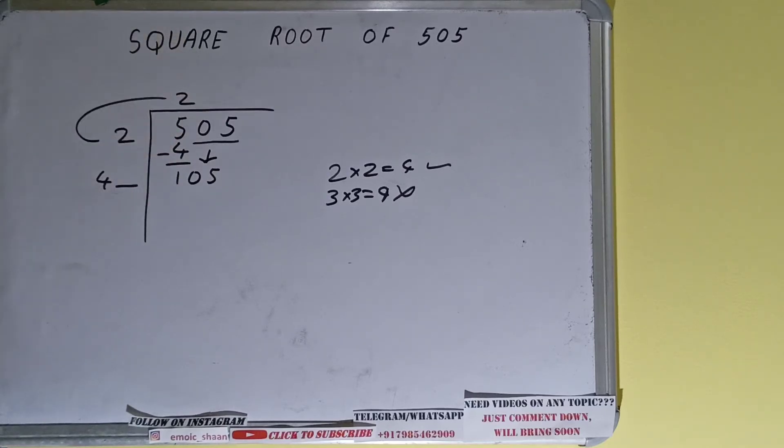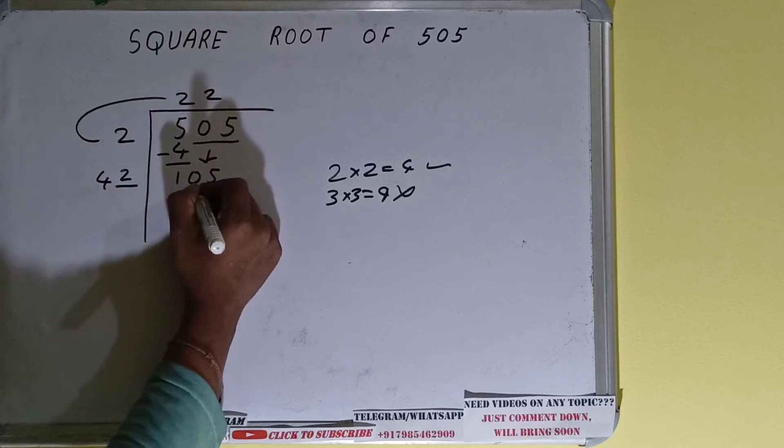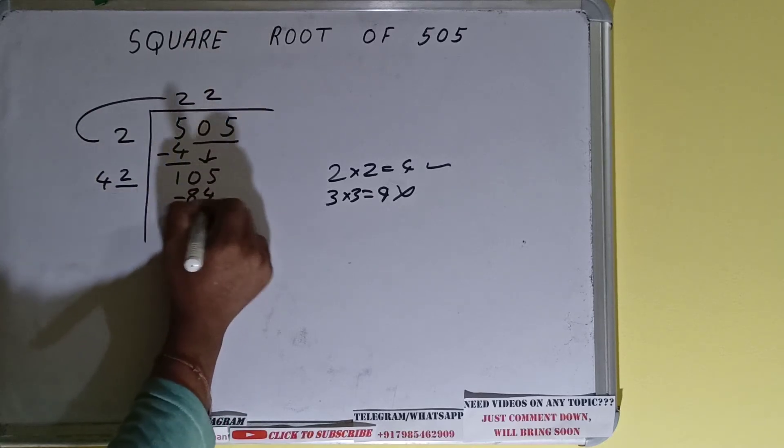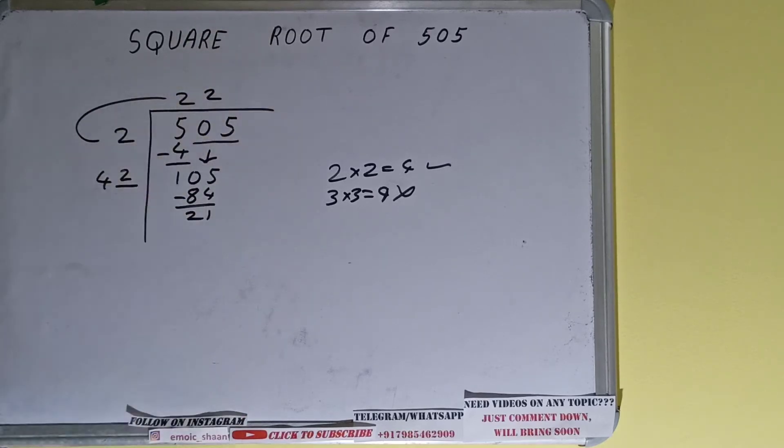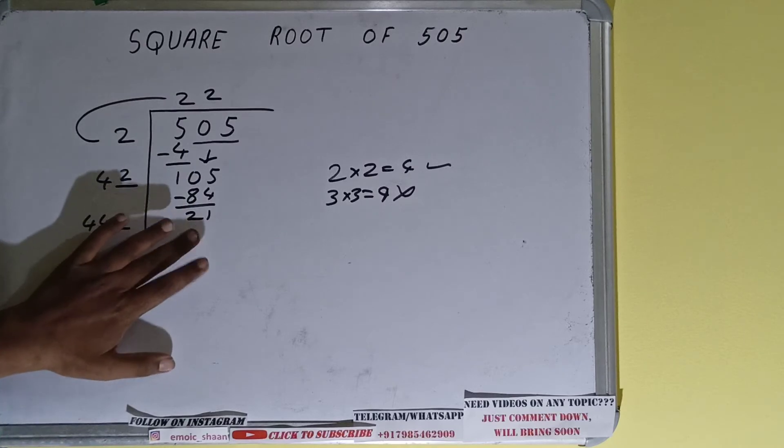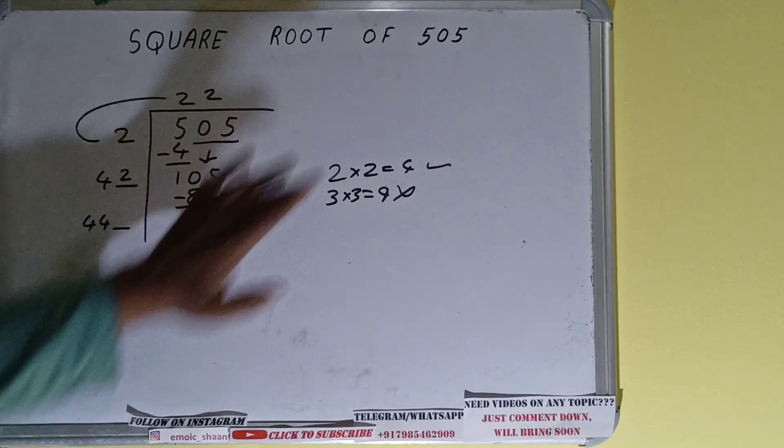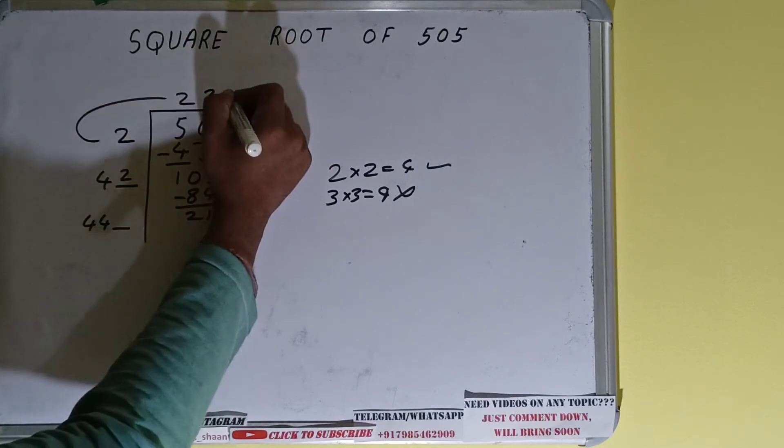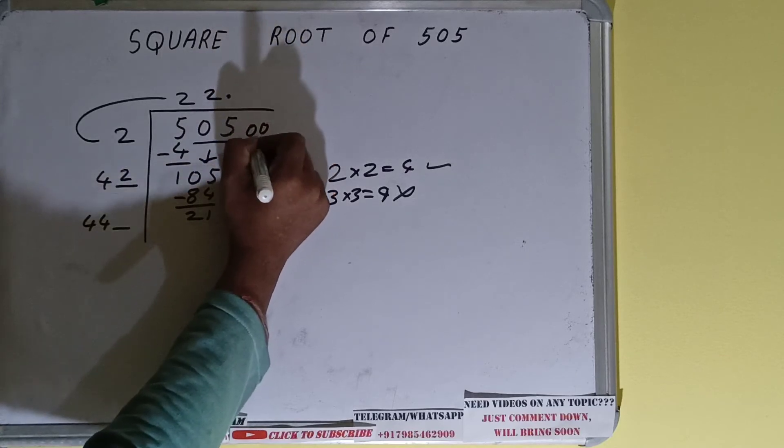Now whatever number we write here we have to write here also. So if we add two here and two here it will give 84, and on subtracting 21 will be left. Now 42 into 2, so add both. So 42 plus 2 will be 44, and keep one digit extra, and this number we need to make it big. But we don't have any more pair.